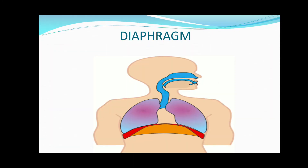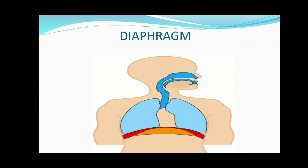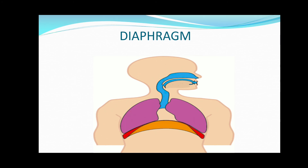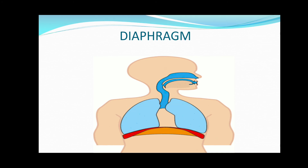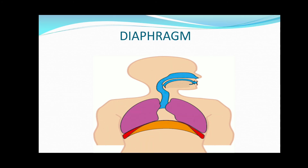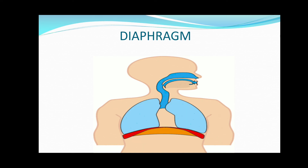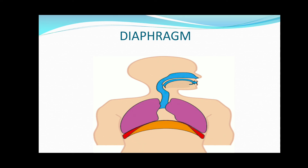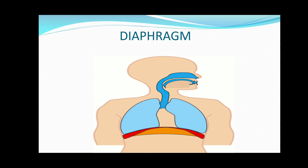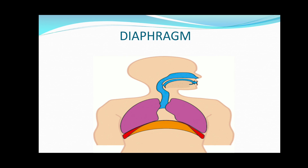Next is the diaphragm. The lungs cannot move on their own. It is the movement of the diaphragm along with the muscles between the ribs and the chest wall that causes the expansion and contraction of the lungs, and thus breathing takes place.